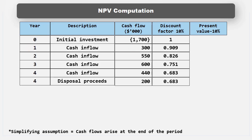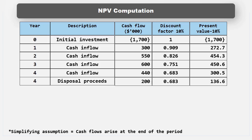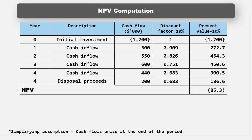Then multiply the discount factor by the cash flow to work out the present value of each cash flow. Finally, add up all the present values to get the NPV.